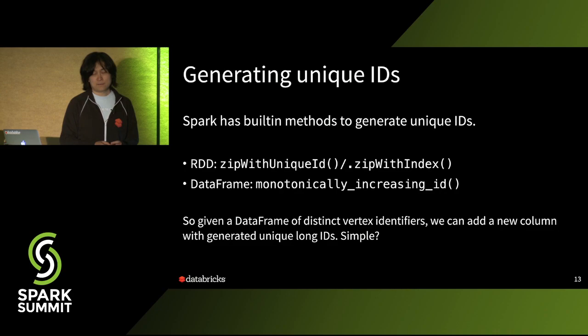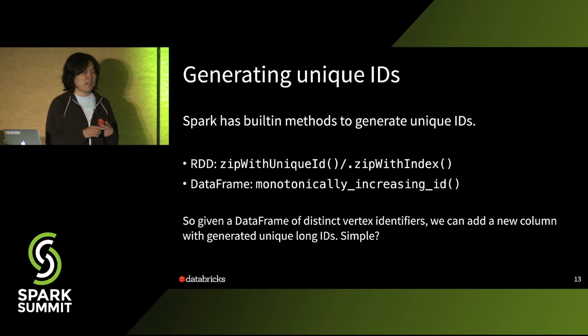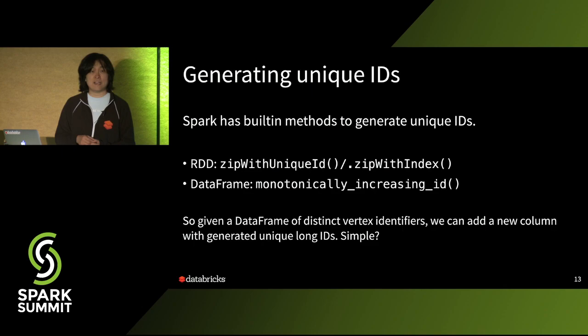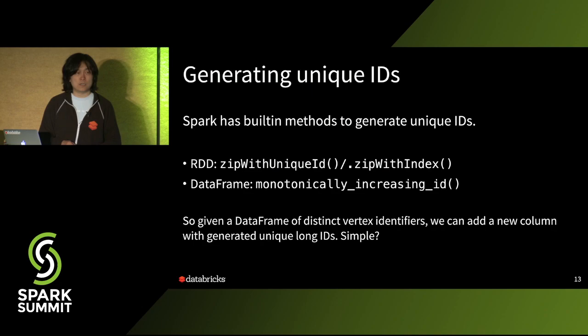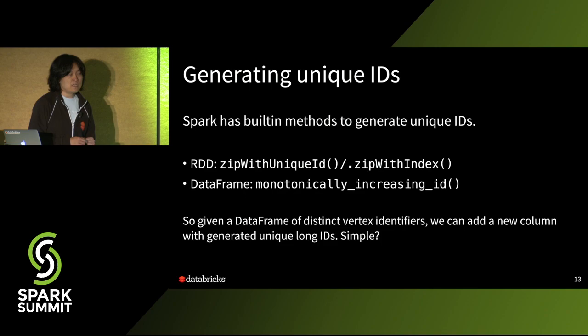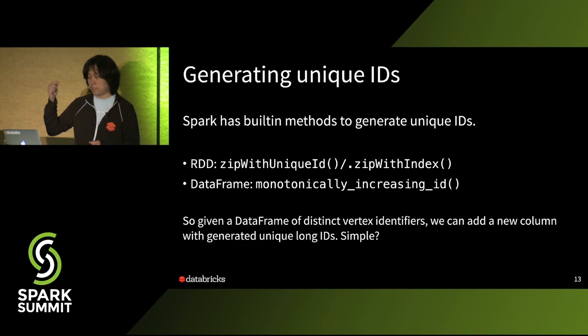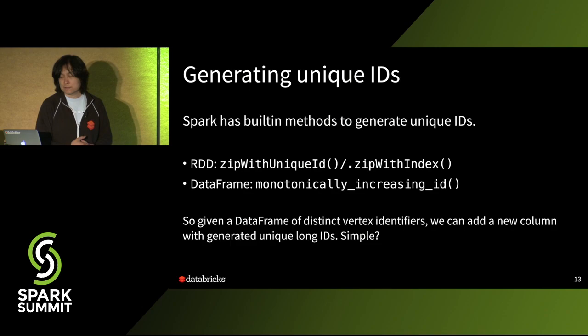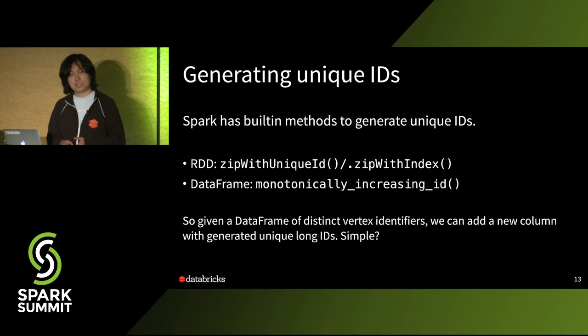There are other ways to generate unique IDs in Spark. For RDD you can call zipWithUniqueID — each record gets a unique long integer ID. Or you can call zipWithIndex — each record gets an index starting from zero counting up. In DataFrames, you can use a UDF called monotonically_increasing_id — you just append a new column to your DataFrame with increasing long IDs, and those are all unique. So given a DataFrame of vertices, you append this new column with generated long integers, get the mapping, save the mapping, and use it later.